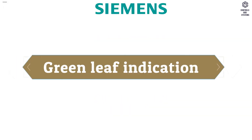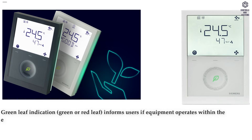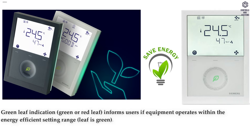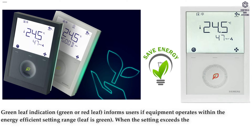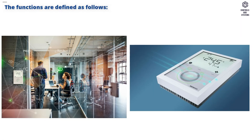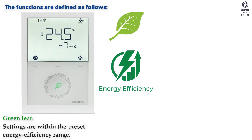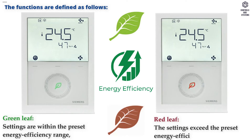Green Leaf Indication: A green or red leaf informs users if equipment operates within the energy-efficient setting range. The leaf is green when within range. When the setting exceeds the preset energy efficiency range, the leaf color changes to red. End users can press the red leaf to return to the energy efficiency setting. Green Leaf means settings are within the preset energy efficiency range; Red Leaf means settings exceed the preset energy efficiency range.